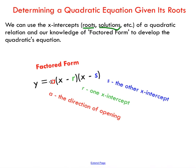As in all forms of a quadratic, the a value refers to the direction of opening. It also tells you the stretch or compression factor. And the r and the s values here, these are your x-intercepts, which you're going to be given in all the problems that we're looking at in this video.